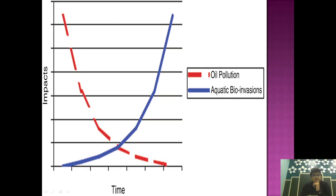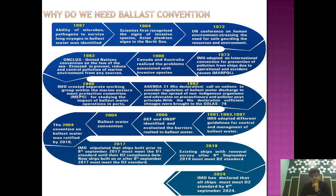Through this graph, during the 1970s and 1980s we mainly focused on oil pollution incidents and bulk carrier incidents, trying to reduce them by bringing in new conventions like MARPOL and SOLAS. But another problem rising very rapidly was aquatic bio-invasion, which came to our attention in the 1980s.